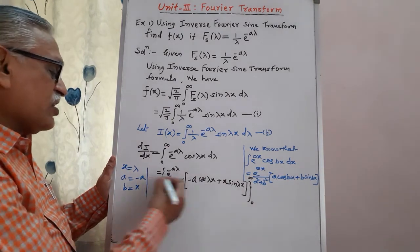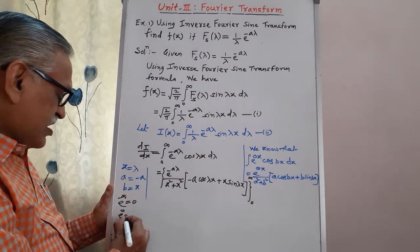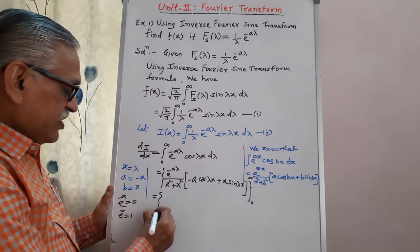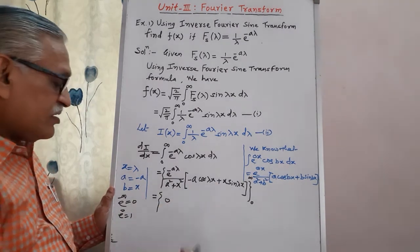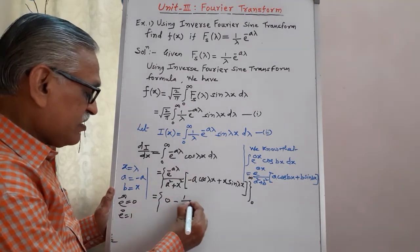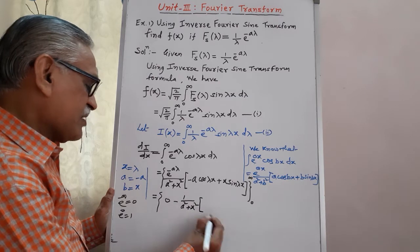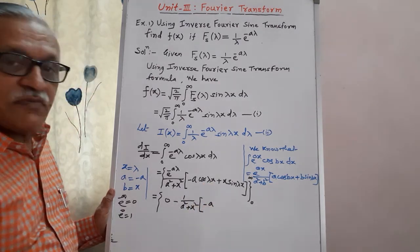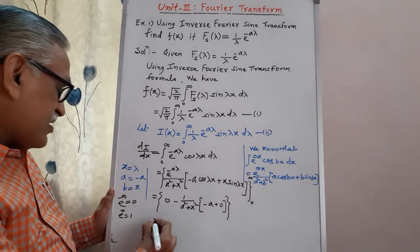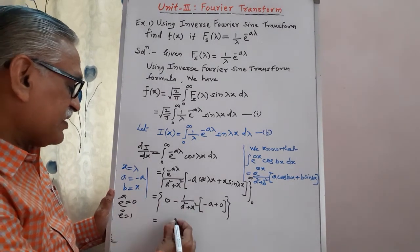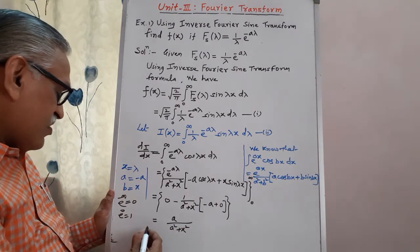Substituting the upper and lower limits: for the upper limit, e raised to minus infinity is 0, so that term is 0. For the lower limit, e raised to 0 is 1, cos(0) is 1, and sin(0) is 0. Therefore we get 0 minus [1 divided by (a² + x²) multiplied by (minus a times 1 plus x times 0)], which simplifies to plus a divided by (a² + x²). That is the value of d i by dx.